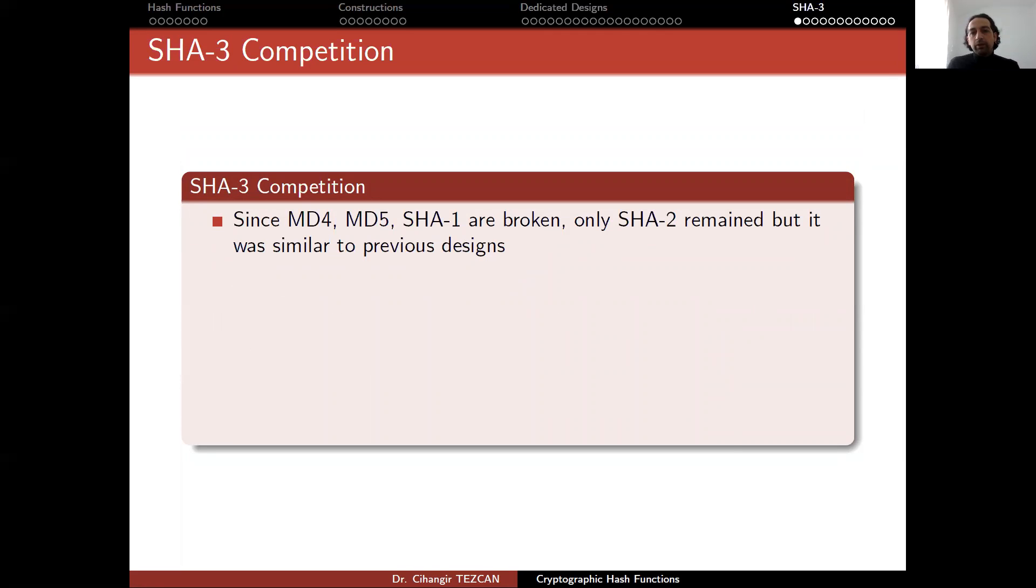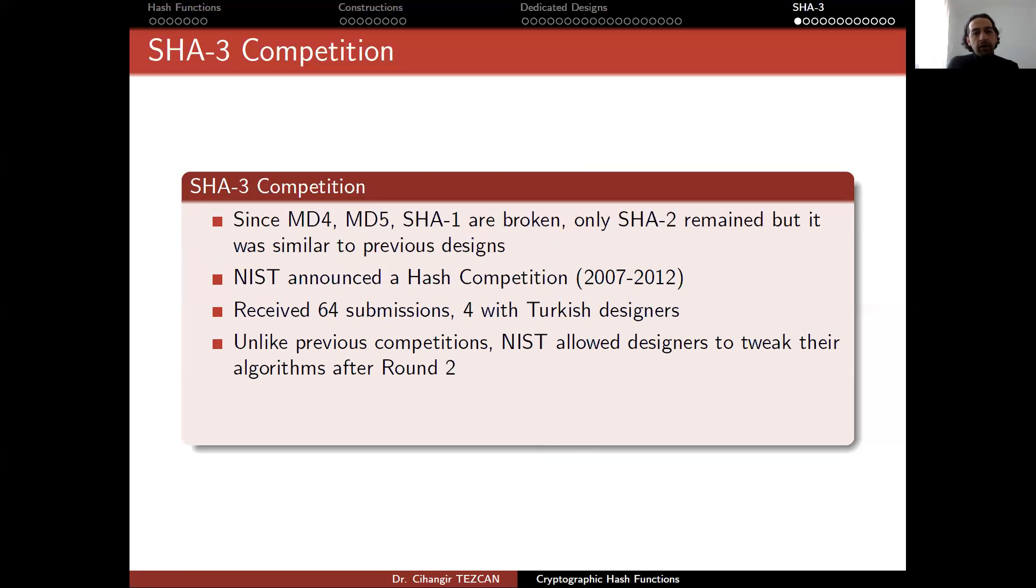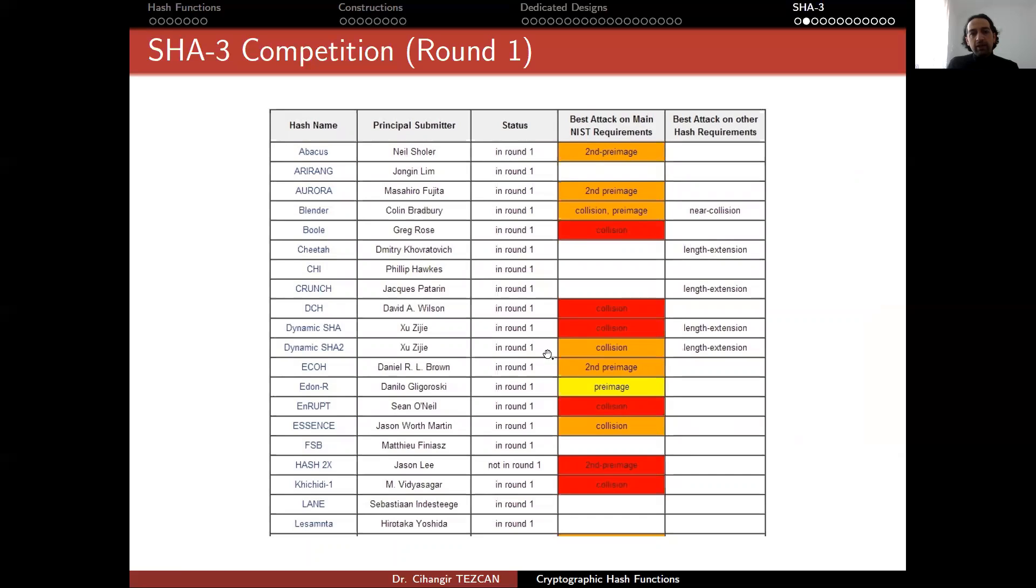Let me summarize why this competition was designed. Since MD4, MD5, SHA-1 are broken, only SHA-2 remained, but it was similar to previous design. It was just a Merkle-Damgard with similar operations. NIST announced the hash competition and this competition was held between 2007 and 2012 and it received 64 submissions. Four of them were from Turkish designers. Of course, two of them were abroad at the time. Not all of them sent from Turkey. Unlike previous competitions, NIST allowed designers to tweak their algorithms after round two. This was something new and you can find almost every information about this competition in SHA-3 zoo from this web page. These are some screenshots from that web page. This actually shows the algorithms that were eliminated in the round one.